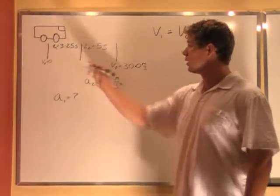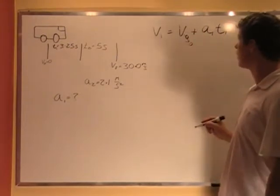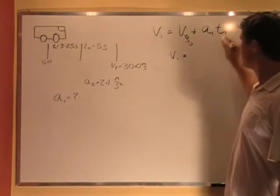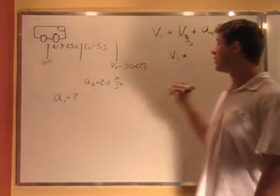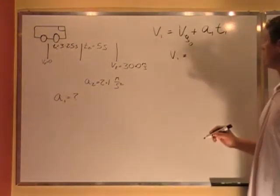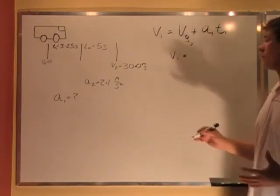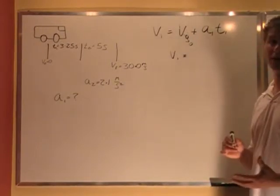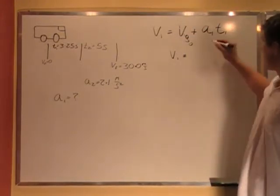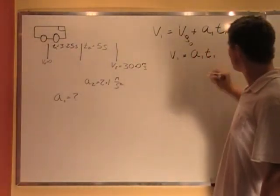So as we can see here, our initial velocity is 0, so this term is 0. If we put a 0 in, we can say V1 equals A1 times T1. A1 we don't know, but T1 we know to be 3.25 seconds. So if we can figure out another expression relating V1 to A1, we'll be able to substitute in for that and figure out exactly what our initial acceleration is. So for now, we can leave this as V1 equals A1 T1.